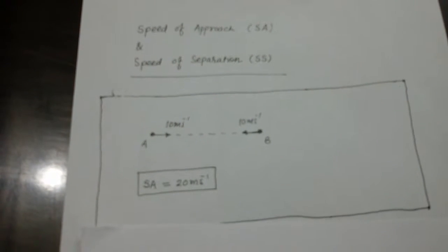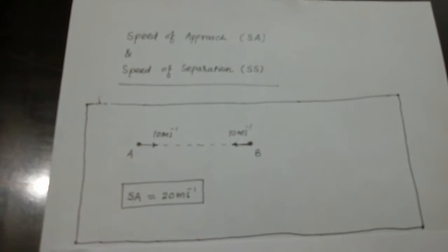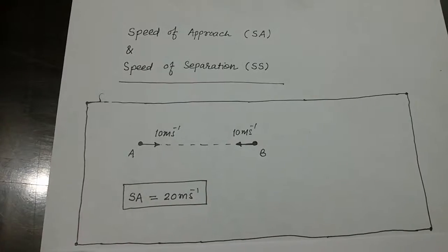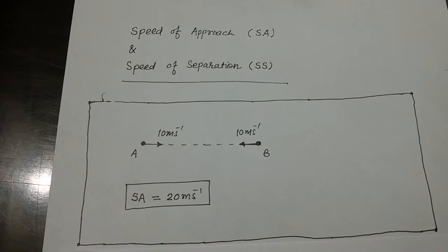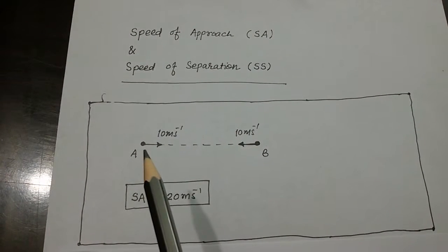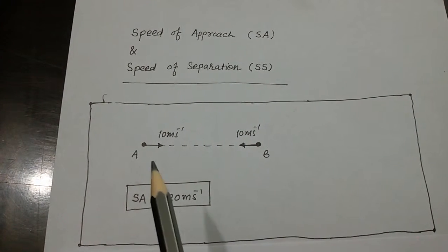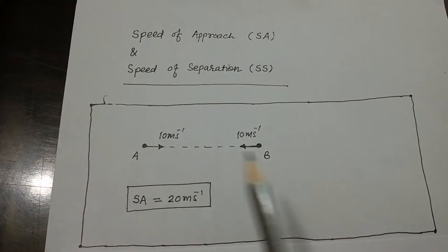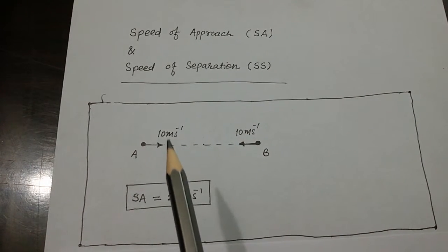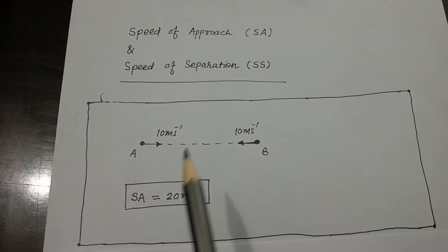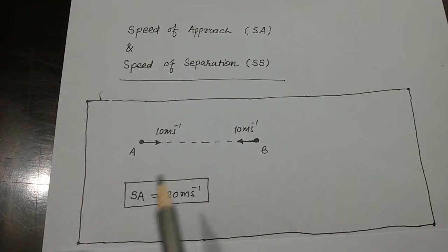Dear students, we are going to study a very important concept known as speed of approach and speed of separation. Let us understand this concept with the help of an example. Here two particles are shown, moving towards each other with speed 10 meters per second each. So speed of approach is 20 meters per second.